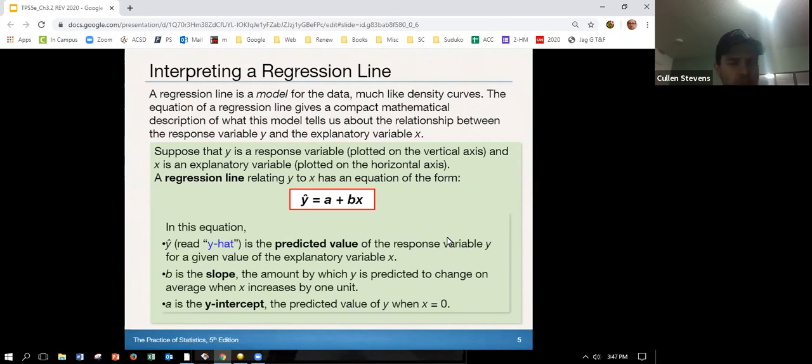B is the slope. We've seen that before. It's the coefficient right in front of the x. That's the amount by which y is predicted to change on average when x increases by one unit. Remember that slope is the average rate of change. Slope is an average. And then a is our y-intercept, the predicted value of y when x is equal to zero. So this is the form that we talk about it. Y or the predicted y is equal to a plus bx.